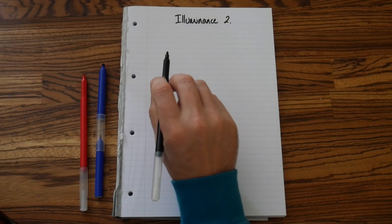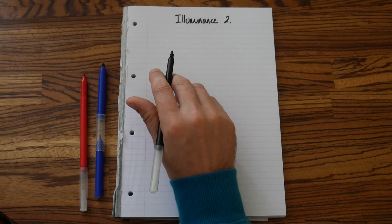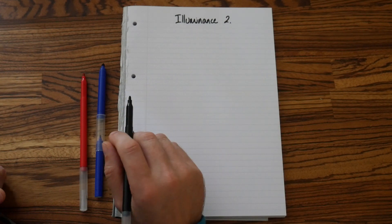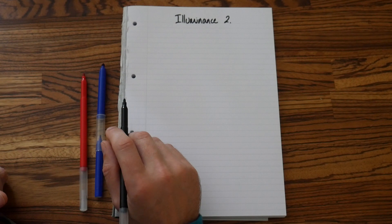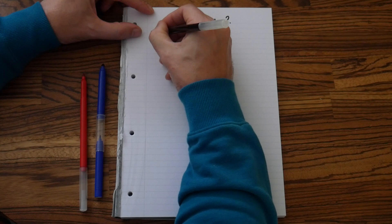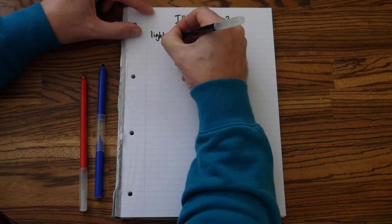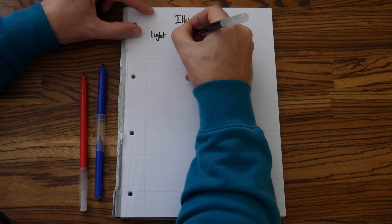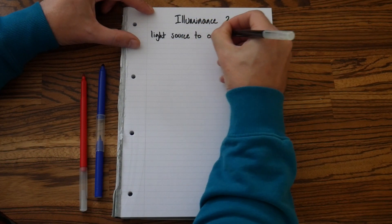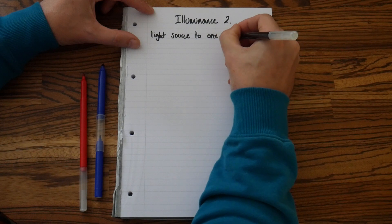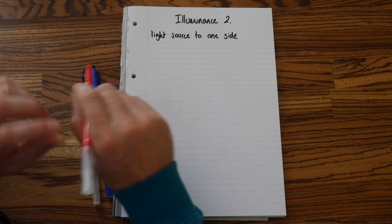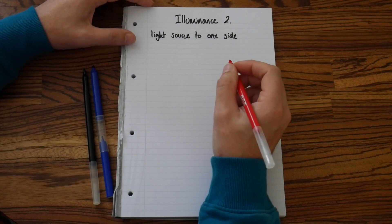Now this is working out the Illuminance of an object that's off to one side from our light source. So if we write down light source to one side, i.e. it's not directly above. So switch pens. Let's get our red pens. We're going to start with a formula.